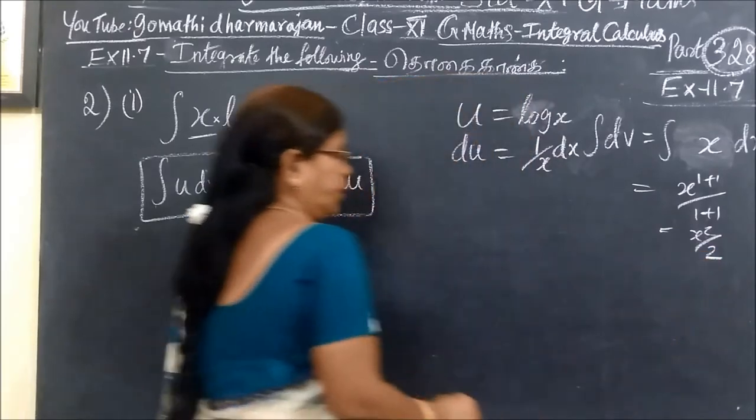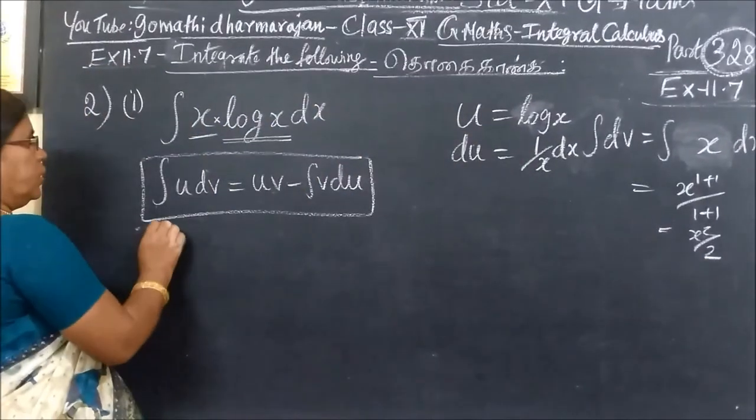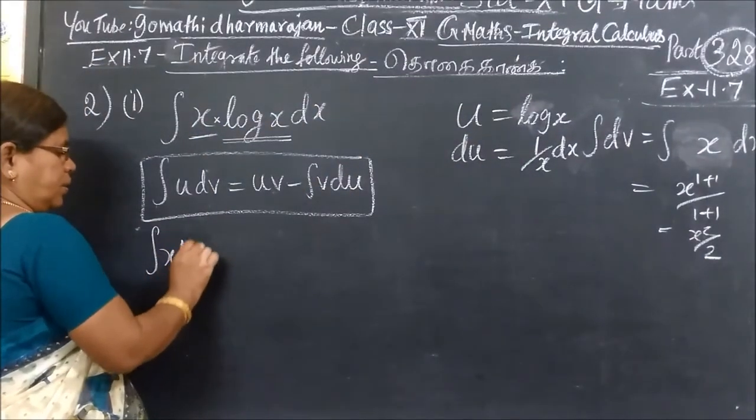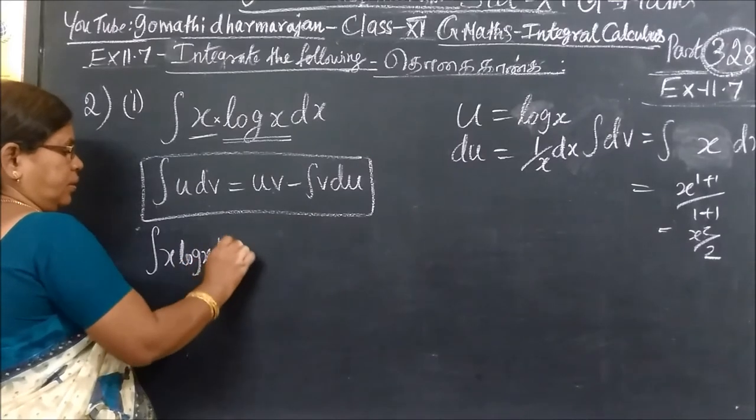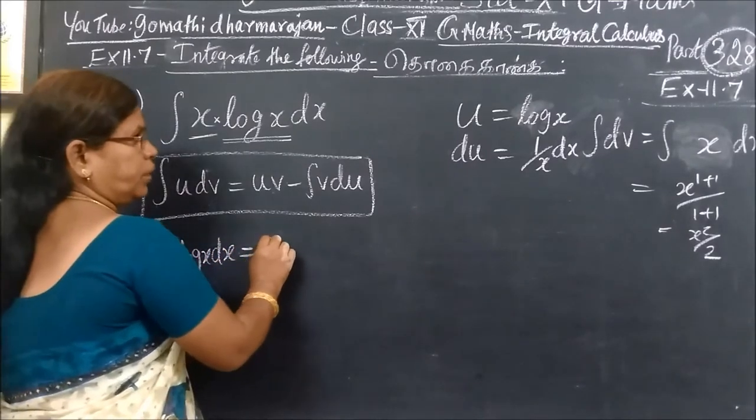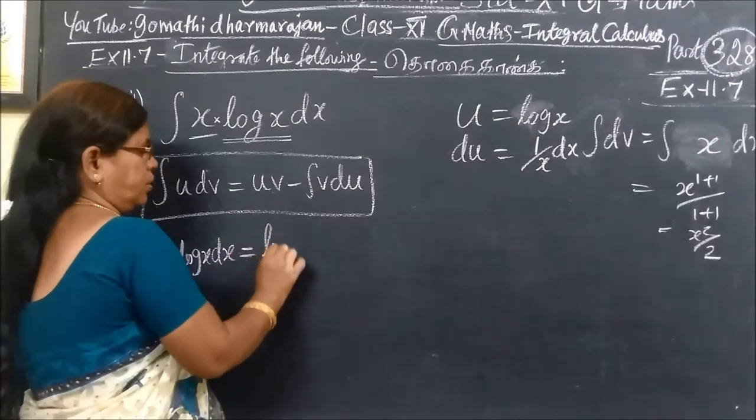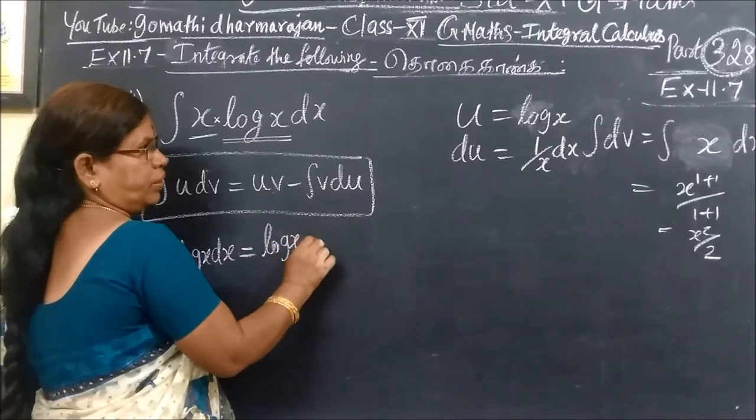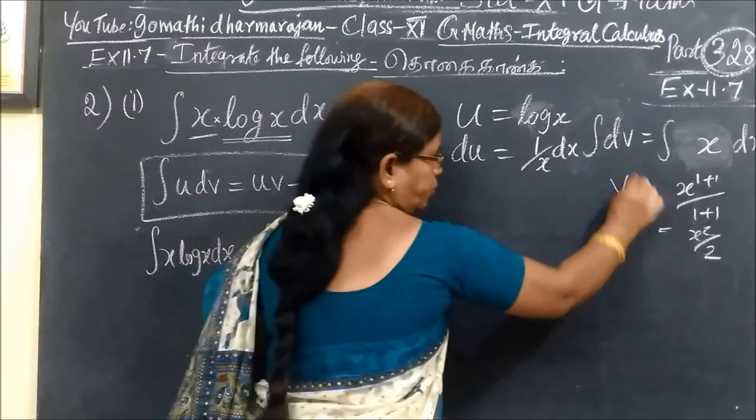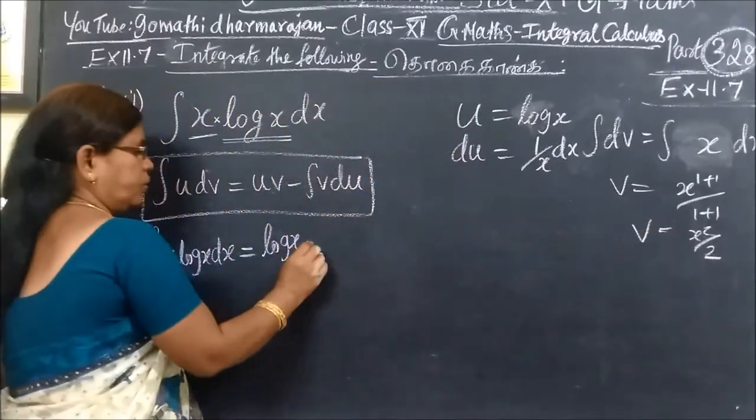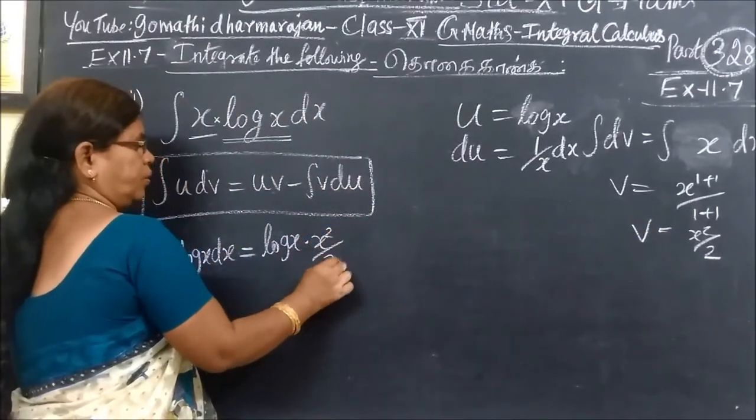So U is log x, dV equals x dx. U is log x, then V is x squared by 2.